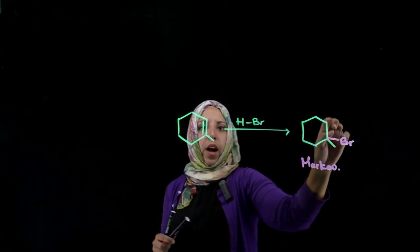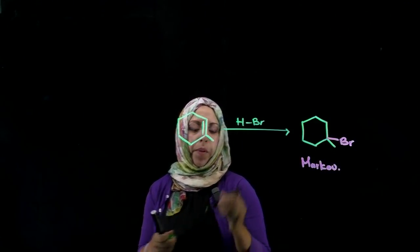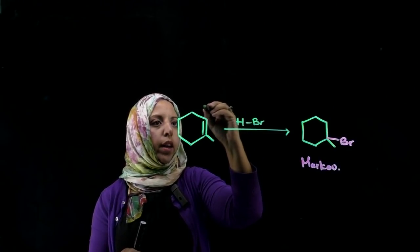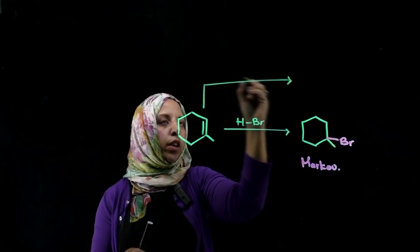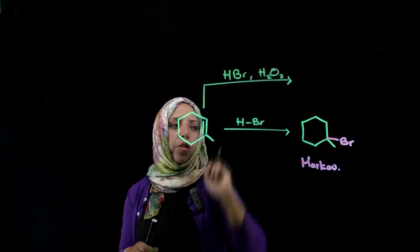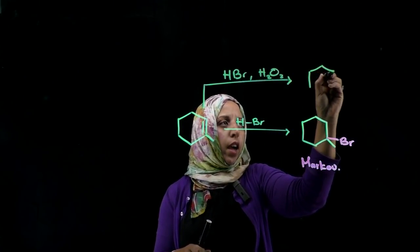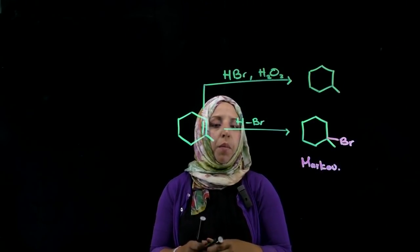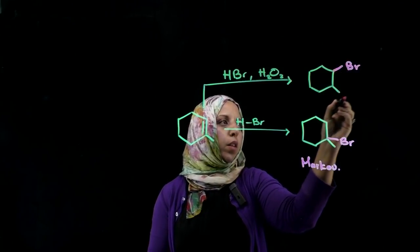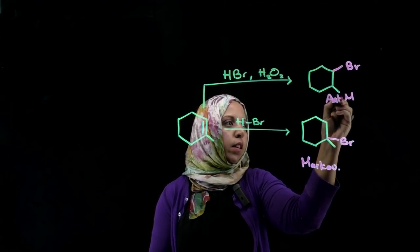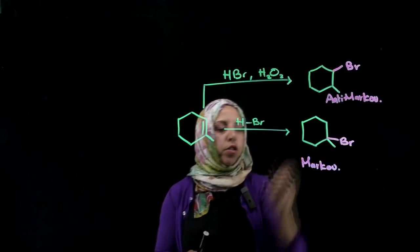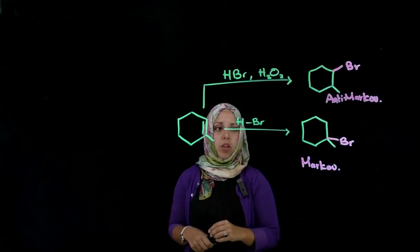Now suppose you wanted bromine to add to the less substituted end of that carbon-carbon double bond. There is a similar reagent that would achieve that. We would still be using hydrogen bromide, but we would add a peroxide — the simplest being hydrogen peroxide. What we get is the halogen adding to the less substituted position of the carbon-carbon double bond. We refer to that as an anti-Markovnikov addition.